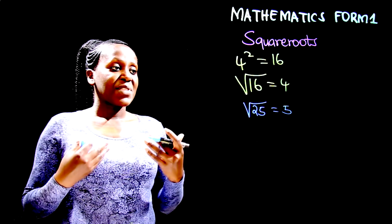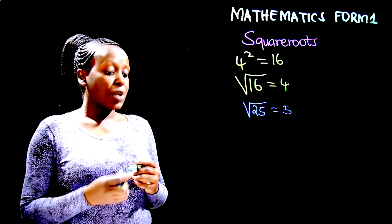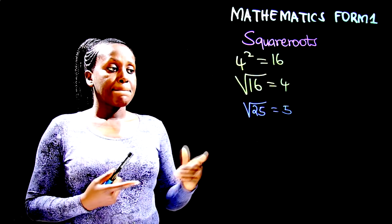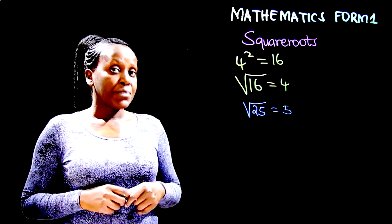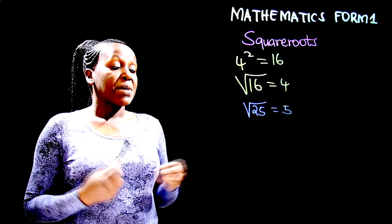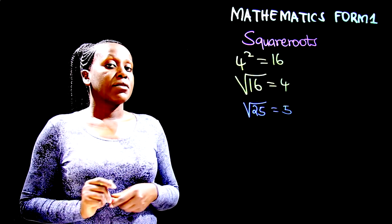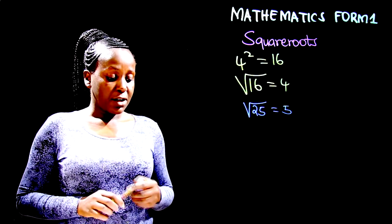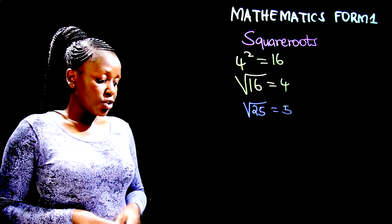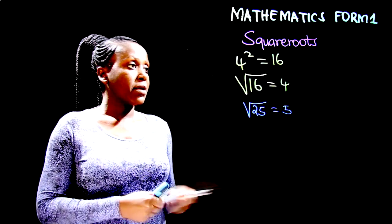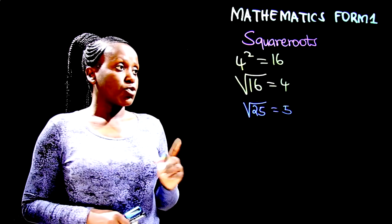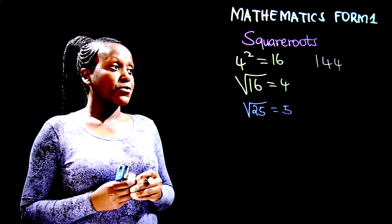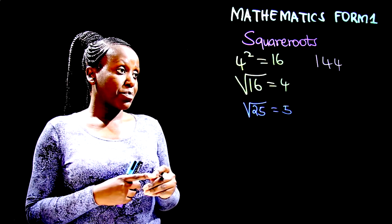The simplest way to obtain the square root of a number, especially big numbers whose square roots you can't easily guess, is to write the numbers first in factor form by finding the prime factors. We are going to begin with the number 144. We can express 144 as a product of its prime factors.